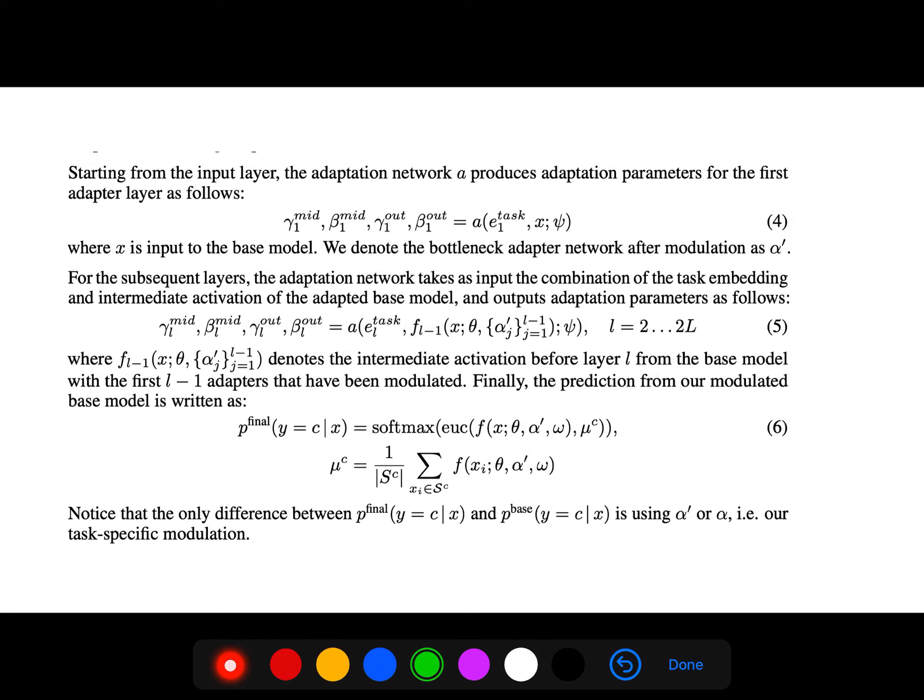Starting from the input layer, the adaptation network produces adaptation parameters for the first adapter layer. X is input to the base model, and we denote the bottleneck adapter network after modulation as alpha prime. For the subsequent layers, the adaptation network takes as input the combination of task embedding and intermediate activation of the adapted base model and outputs adaptation parameters. Finally, the prediction from our modulated base model can be written as a softmax, and this is just the mean of the cluster.